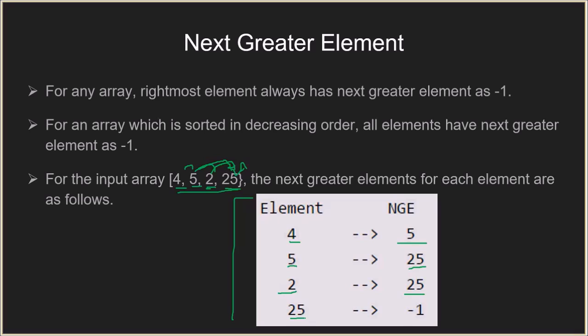The next greater element for 25 will be minus 1. It is also mentioned that for any array, the rightmost element always has the next greater element as minus 1. For any array sorted in decreasing order, all elements have the next greater element as minus 1, because starting from the biggest element to the smallest, there is no next greater element towards the right side.